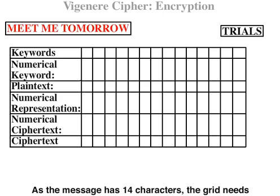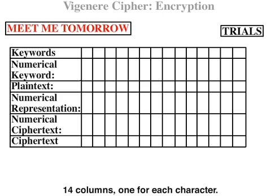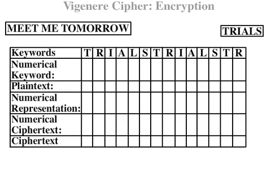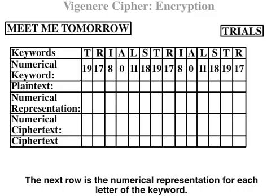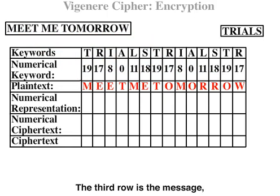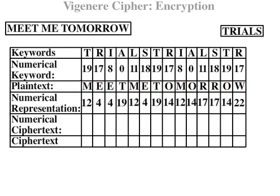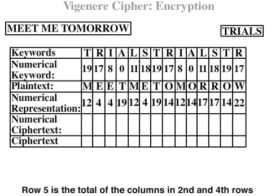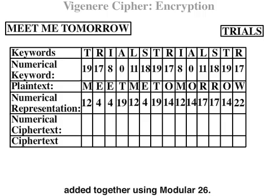As the message has 14 characters, the grid needs 14 columns, one for each character. The first row is the keyword 'trials,' repeated to fill all the columns. The next row is the numerical representation for each letter of the keyword. The third row is the message 'Meet me tomorrow.' Row 4 is the numerical representation for the plain text message.